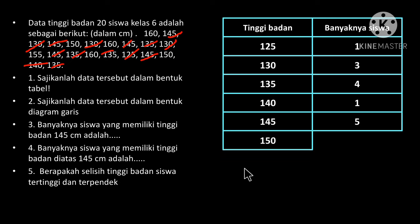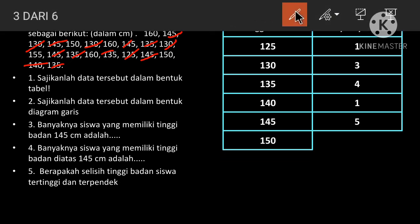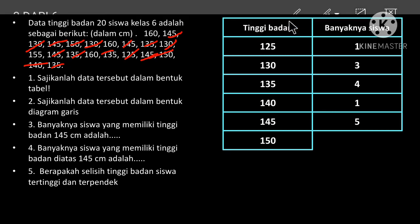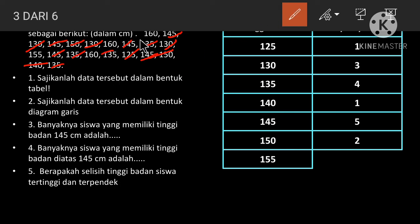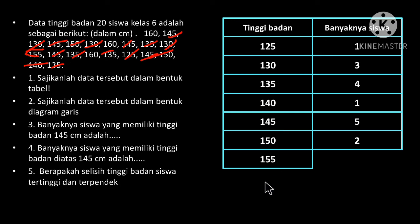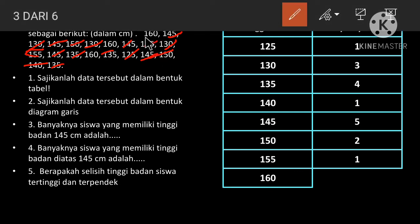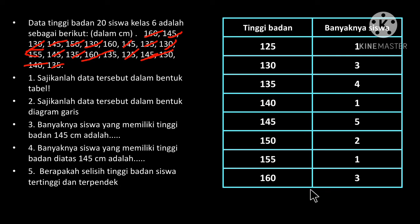Yang selanjutnya adalah yang 150 cm. Kita hitung bersama-sama. Satu, dua. Terdapat dua siswa dengan tinggi badan 150 cm. Selanjutnya dengan tinggi badan 155 cm, ada satu siswa. Dan yang terakhir dengan tinggi badan 160 cm, ada dua siswa.